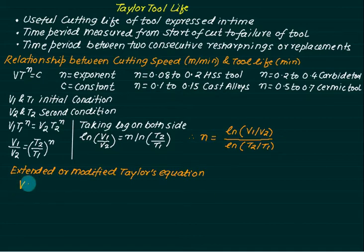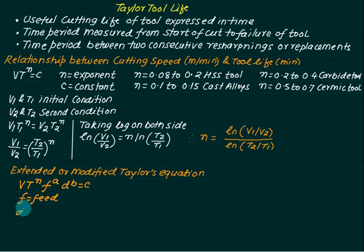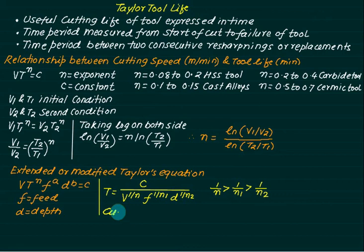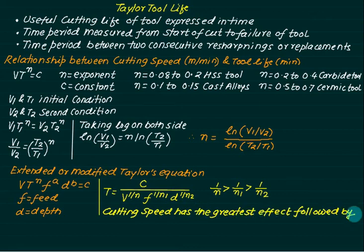The extended modified equation is given by: vt^n * f^a * d^b = C, where f is feed and d is depth of cut. Taylor's tool life is also affected by feed and depth of cut, but the most affected parameter is cutting speed, followed by feed and then depth of cut. We can rearrange this as: t = C / (v^(1/n) * f^(1/n1) * d^(1/n2)), where cutting speed has the greatest effect.